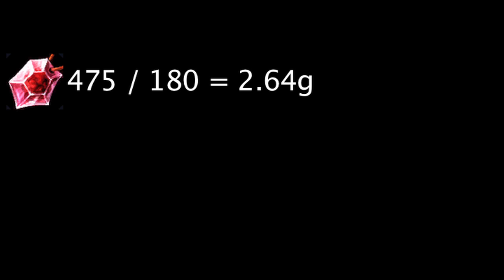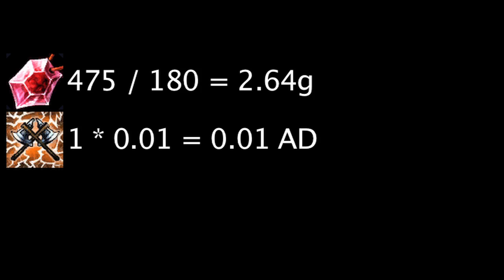Now let's take a look at how cost effective health and attack damage can be on Olaf. One point of health costs 2.64 gold at the cheapest level and will grant 0.01 attack damage while Vicious Strikes is active.